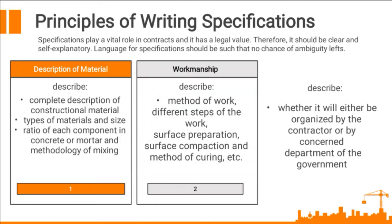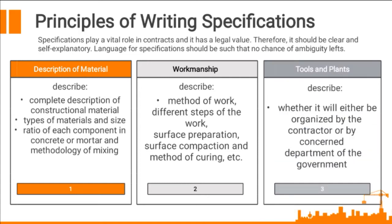The second principle is workmanship. It describes the method of work, different steps of the work, surface preparation, surface compaction, and method of curing, etc. It includes the procedure or methodology of the work — for example, the standards used from ASTM/AASHTO. The third principle is tools and plants. It describes whether these will be organized by the contractor or by the concerned department of the government. This must also be described in writing specifications in the order they can be organized before commencing the construction project.